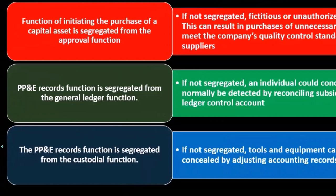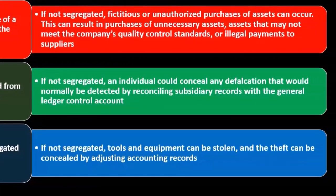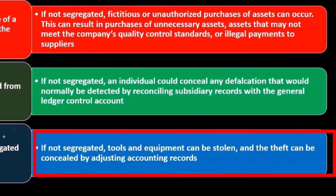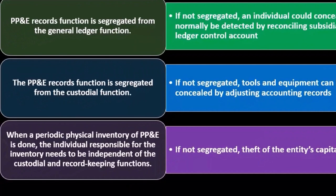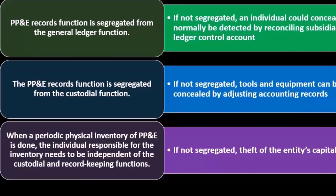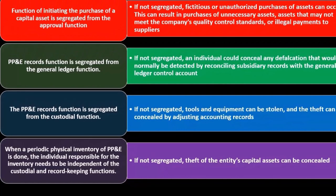The PP&E records function is also segregated from the custodial function. The custodial people are essentially taking care of or overseeing the maintenance and caretaking of the property, plant and equipment — you could consider them as having basically possession of it. If this was not segregated, tools and equipment can be stolen and the theft can be concealed by adjusting the accounting records.